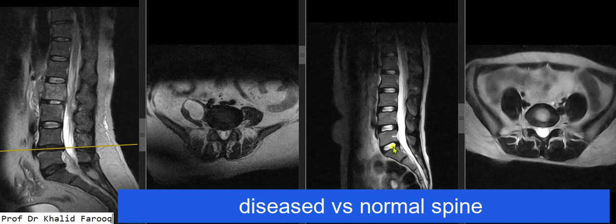Here we can see there is normal alignment of the lumbosacral spine and all vertebrae show normal marrow signals. In this case, however, there is an area of marrow abnormality in the L2 vertebra, while the remaining vertebrae show normal marrow signals.